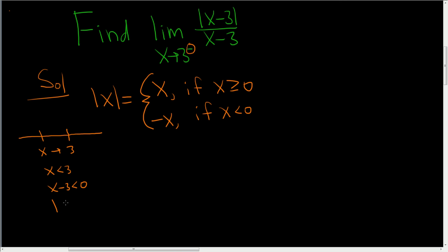So x minus 3 must be less than 0. That means the absolute value of x minus 3, well, according to the definition, since x minus 3 is less than 0, we use this piece.